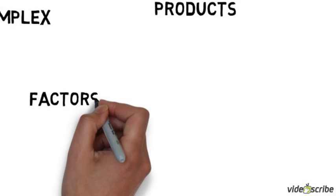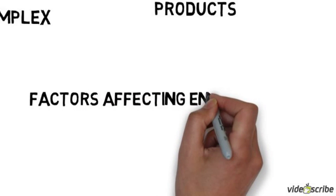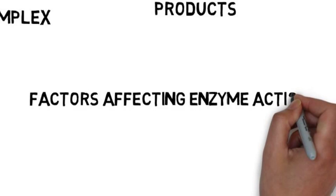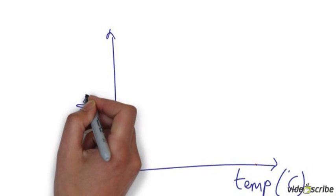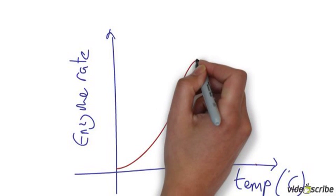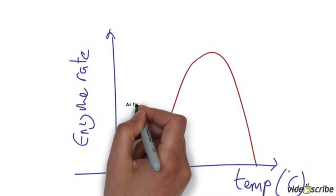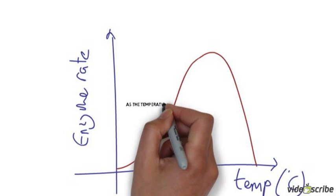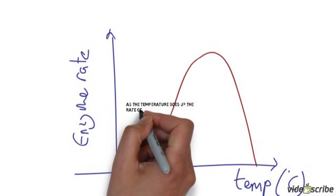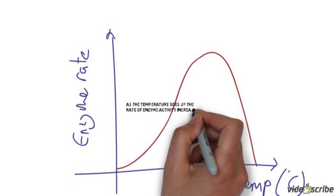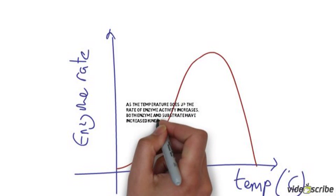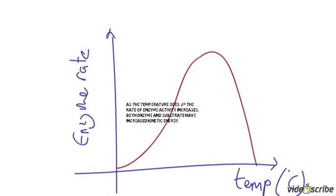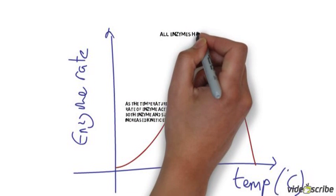There are a number of factors that influence how quickly enzymes work. One of the first factors is temperature. Temperature affects the rate of a chemical reaction because particles move at different speeds and vibrate at different intensities as the temperature changes. As temperature goes up inside a cell, the rate of the enzyme-catalyzed reaction goes up. This is because the particles are moving faster, they're colliding more often, they have a greater chance of collision with sufficient energy, and therefore the reaction happens quicker.